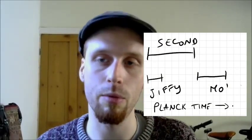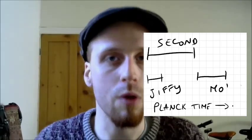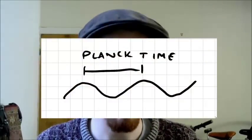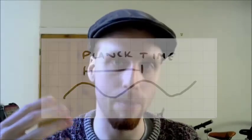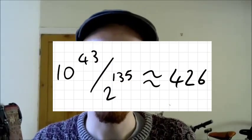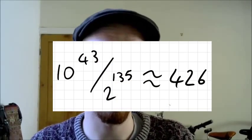That is an exceedingly small amount of time. So if we imagine a pure tone which repeats every Planck time, that would have a frequency of about 10⁴³ Hz. If we take that frequency and divide it by two 135 times — going down 135 octaves — we'll find a tuning A of about 426 Hz. We can call that Planck tuning.